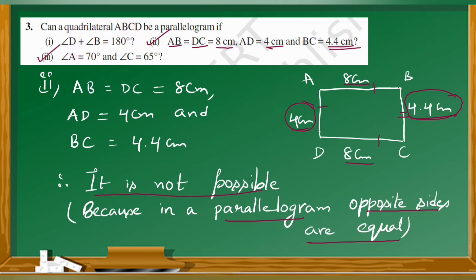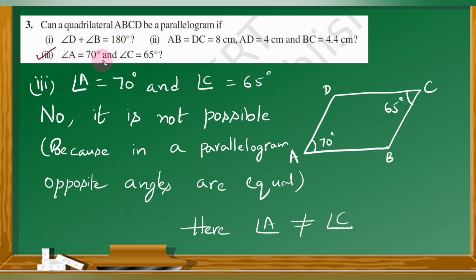Now let us see condition number three. Angle A is equal to 70 degrees and angle C is equal to 65 degrees. Let us draw quadrilateral ABCD with angle A equal to 70 degrees and angle C equal to 65 degrees. Angle A is not equal to angle C.